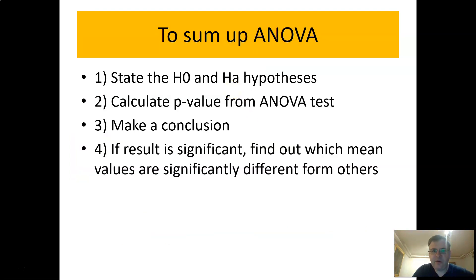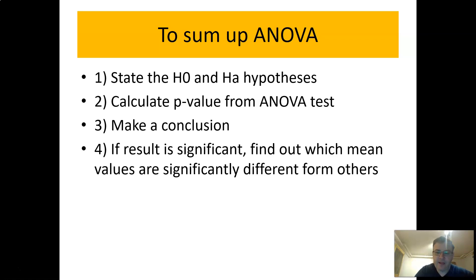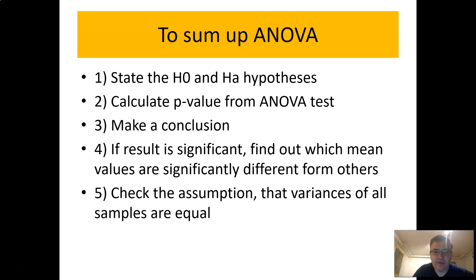To summarize, the ANOVA test procedure involves: first, stating the null and alternative hypotheses; second, calculating the p-value from the ANOVA test and making a conclusion — if the p-value is lower than the five percent significance level, reject the null hypothesis, meaning at least one mean value is significantly different; third, if the result is significant, perform the post-hoc Bonferroni test to identify which specific mean values stand out; and finally, check the assumption that the variances of all samples are equal.